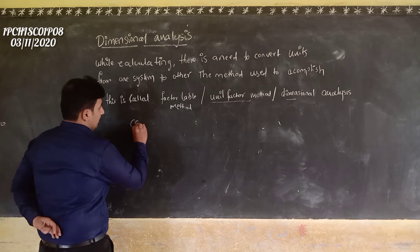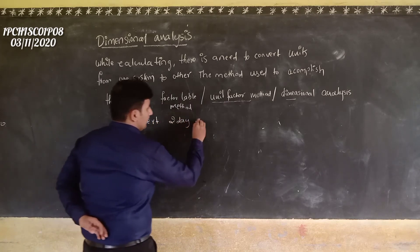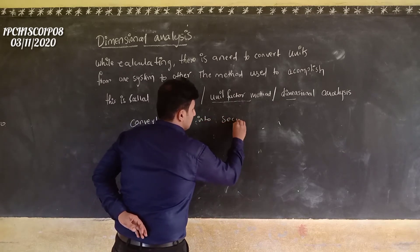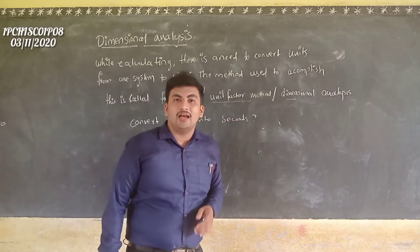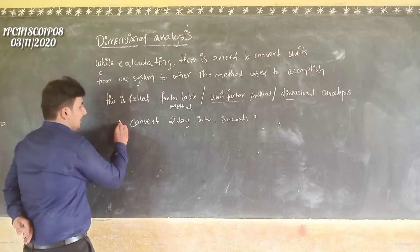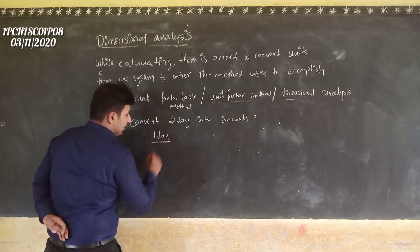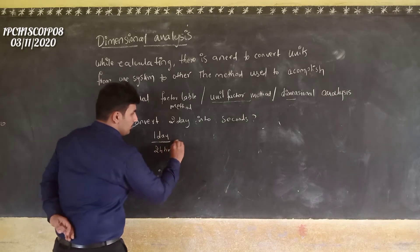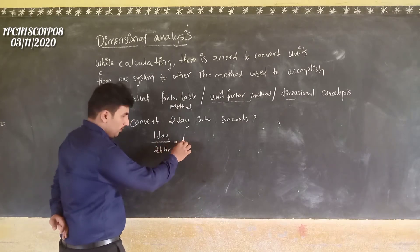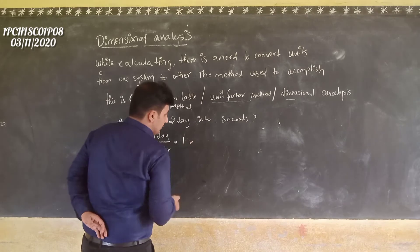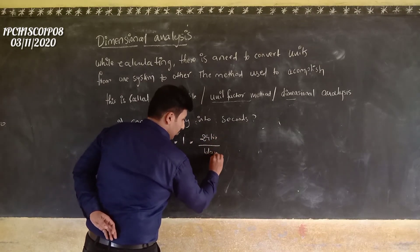Now, convert one more example: convert 2 days into seconds. You know that 1 day is equal to 24 hours, which is equal to 1. So, 24 hours divided by 1 day is one and the same — it equals 1.